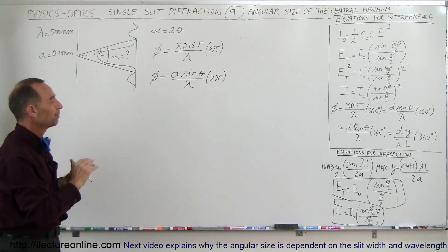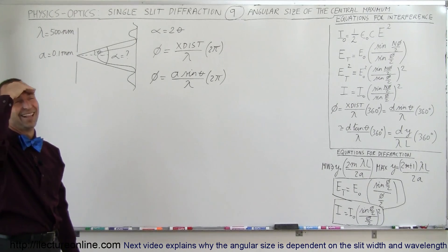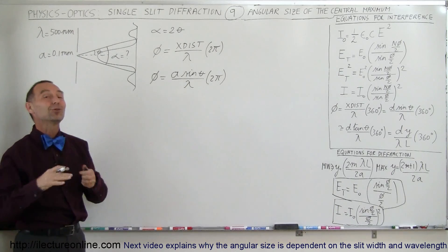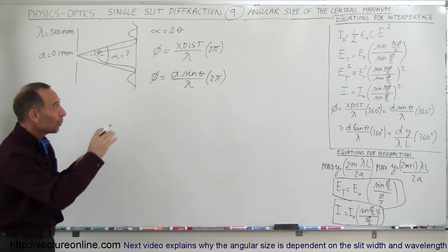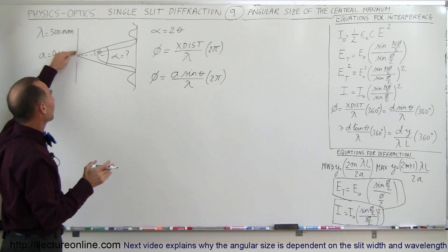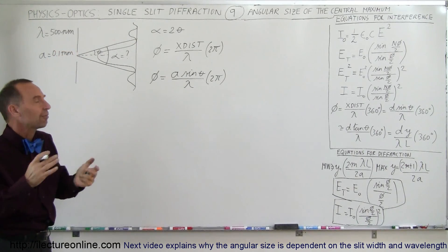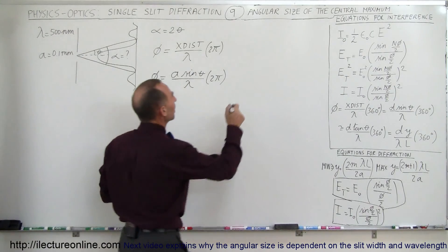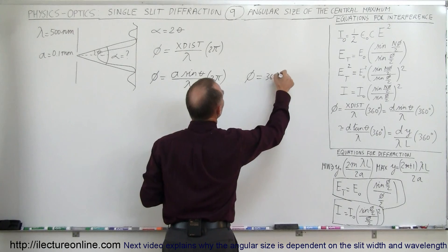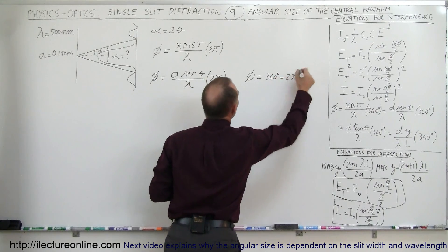That would have to be equal to 360 degrees or 2 pi, one complete cycle, because then the first half of the beam would cancel out the second half of the beam, and that's when we would have our first minimum. So the requirement is that phi has to be equal to 360 degrees or 2 pi radians.